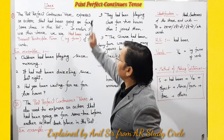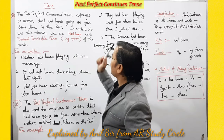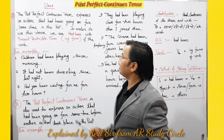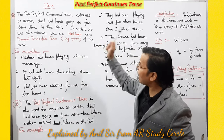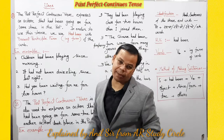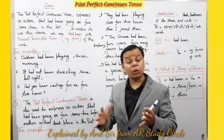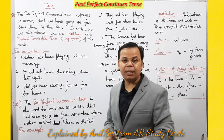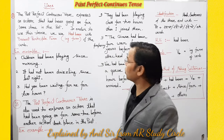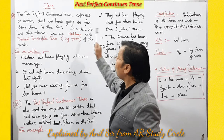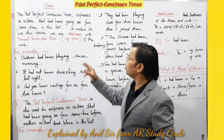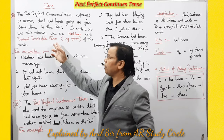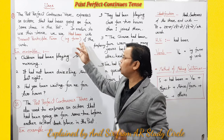The first use of Past Perfect Continuous Tense: it expresses an action that had been going on for some time in the past. Past mein kuch samay tak chalta raha tha — us action ko express karne ke liye Past Perfect Continuous Tense ka use kiya jata hai. We use 'had been' with the ing form of the verb.